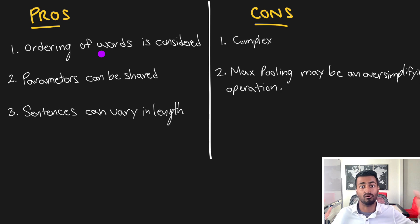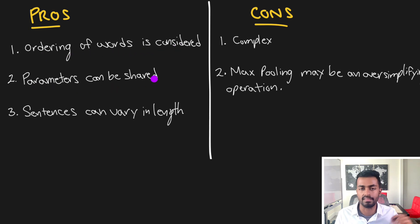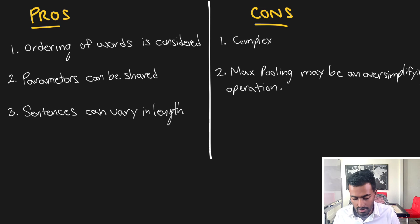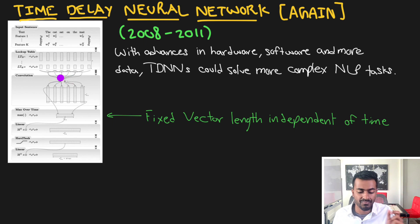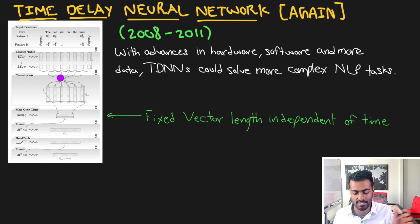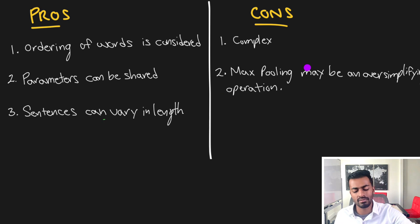The cool things about this time delay neural network approach for solving more complex natural language tasks are: first, the ordering of words is considered; and second, parameters can be shared — this is just the nature of the convolution operation where the learned parameters are the context window, and that context window is shared as we simply slide it across the input. Also, sentences can be of varying length.